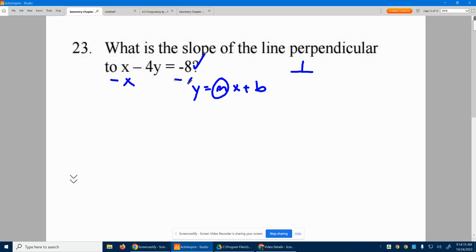So, the first step, we're going to subtract x from both sides. So I get negative 4y equals negative x minus 8.